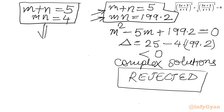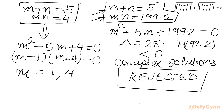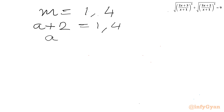Now for System 1: m² - 5m + 4 = 0, which factors as (m-1)(m-4) = 0, giving m = 1 and m = 4. Recalling that m = a+2, we get a = m-2. So a = 1-2 = -1 and a = 4-2 = 2. Since a = 1/(x+1), from a = -1 we get x+1 = -1, so x = -2. From a = 2 we get x+1 = 1/2, so x = -1/2.